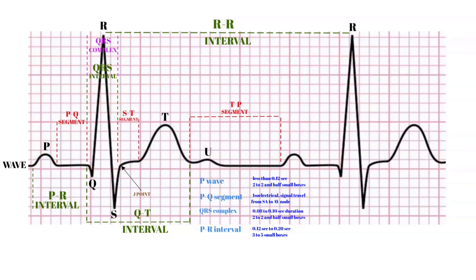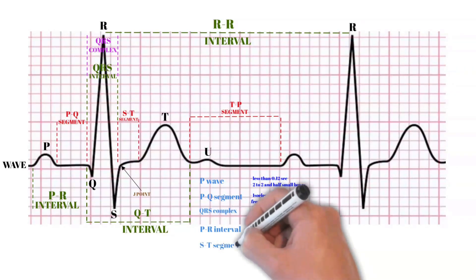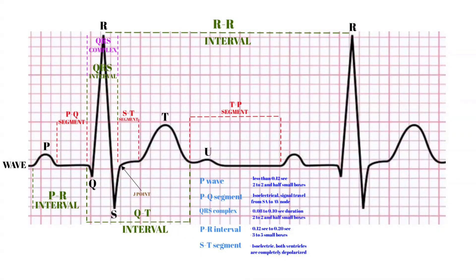The ST segment is an isoelectrical period following the QRS and ending at the beginning of the T wave — the time at which both ventricles are completely depolarized and relaxed. It reflects the plateau of the myocardial action potential. This ST segment is very important in the diagnosis of ventricular ischemia or hypoxia, because under those conditions the ST segment can become either depressed or elevated. It is also essential in diagnosing myocardial infarction.